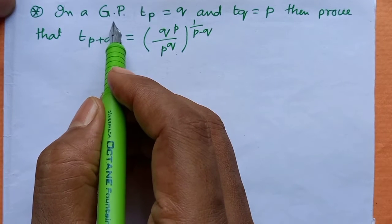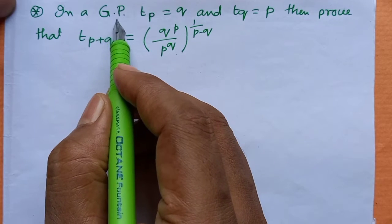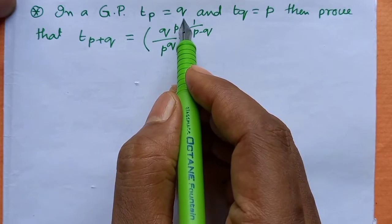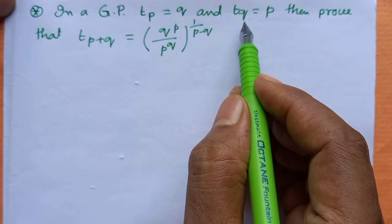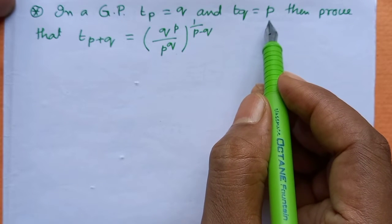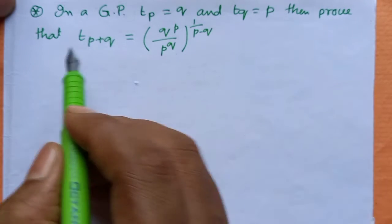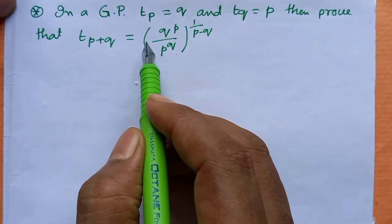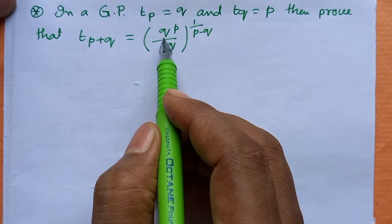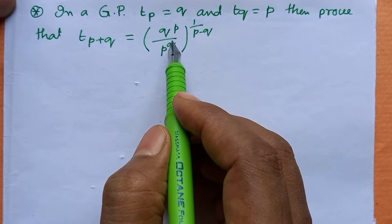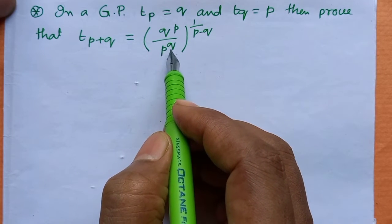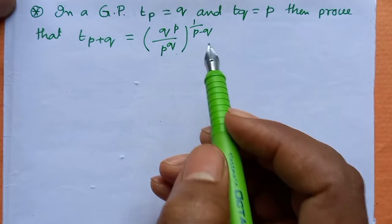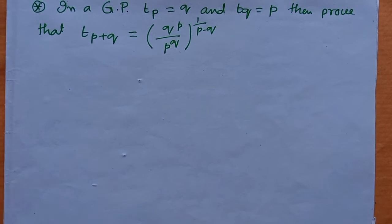In a GP (Geometric Progression), the pth term equals q and the qth term equals p. Then prove that the (p+q)th term equals [q to the power p divided by p to the power q] whole to the power 1 by (p minus q).